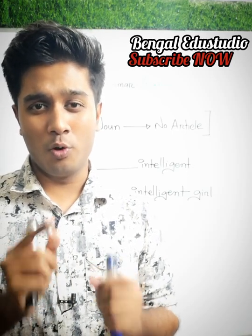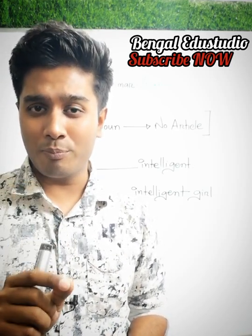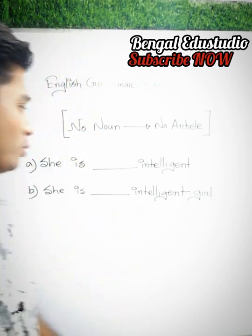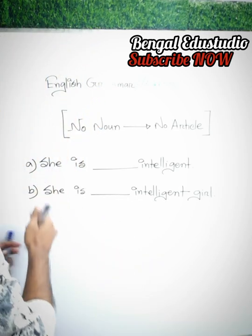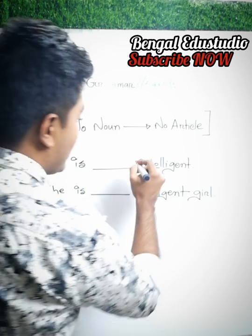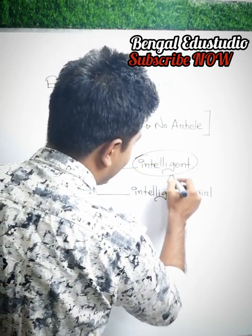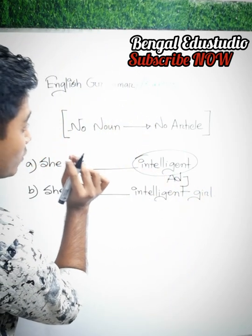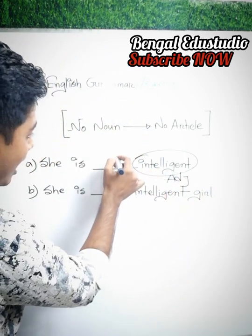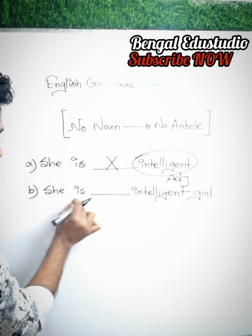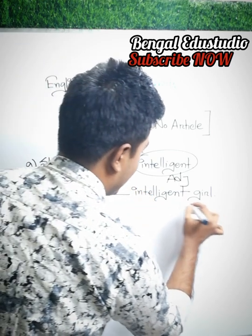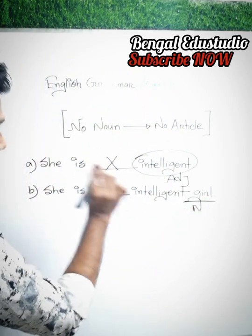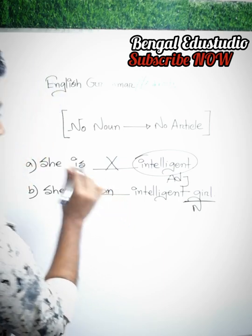No noun, no article. We can use the noun. How do we use the noun? She is intelligent. Intelligent is an adjective. If we use the noun, she is an intelligent girl. Girl is a noun. That means she is a noun. So, she is an intelligent girl.